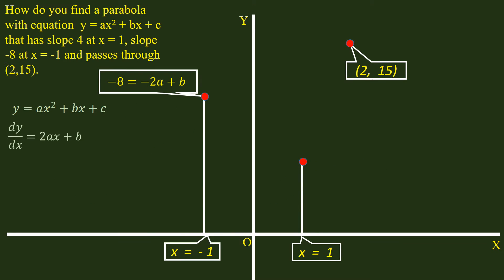-8 = -2a + b. 4 = 2a + b. Solve these two equations simultaneously. We get a = 3 and b = -2.